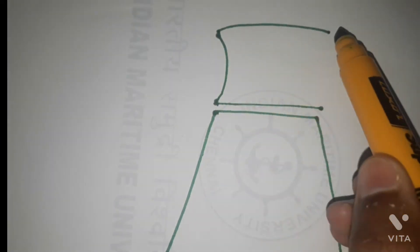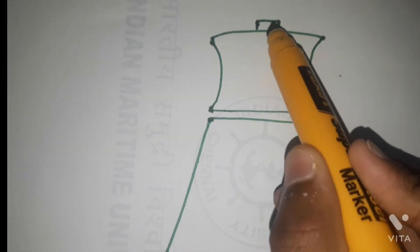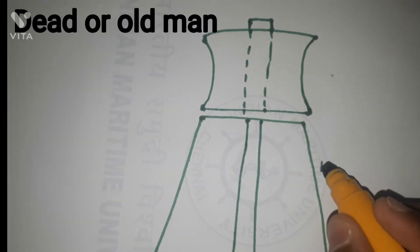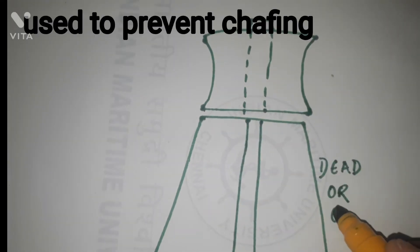In this video I am drawing a dead or old man type of fair lead. This type is used to prevent chaffing and to give a direct lead of mooring line to the windlass, winch or capstan.